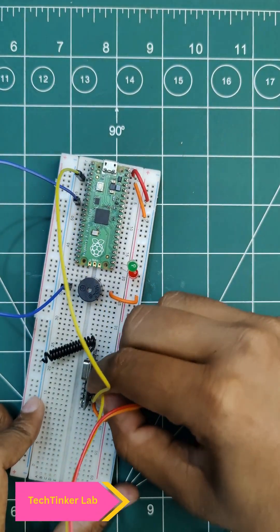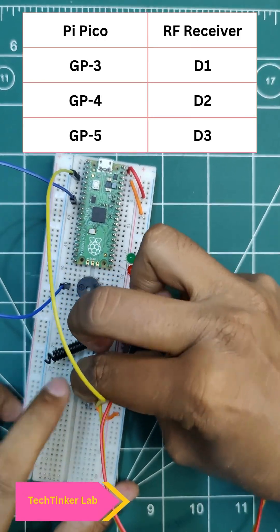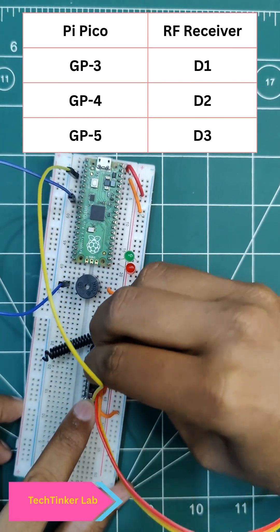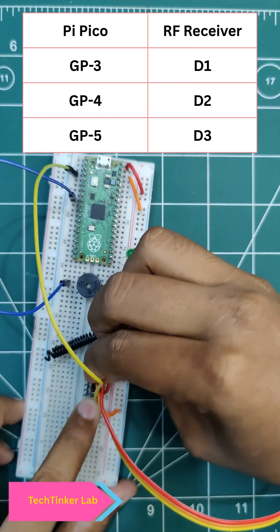Now here you have to connect, just a second. So D1, then D2 and D3.